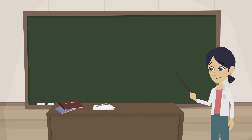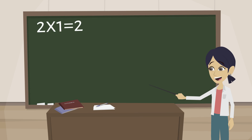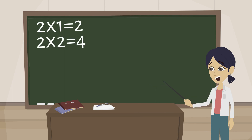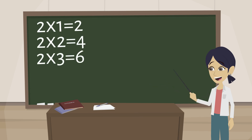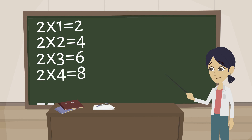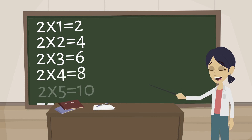2 1s are 2, 2 2s are 4, 2 3s are 6, 2 4s are 8, 2 5s are 10,